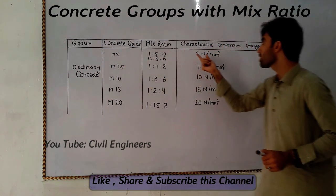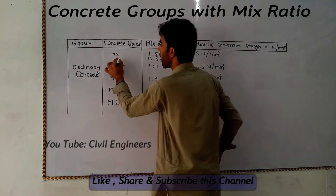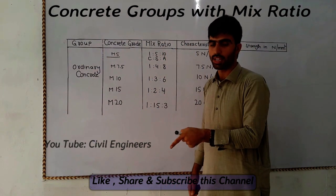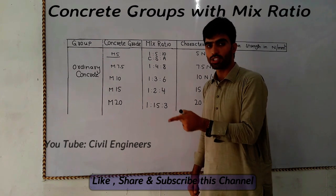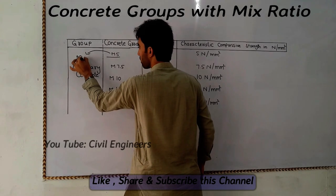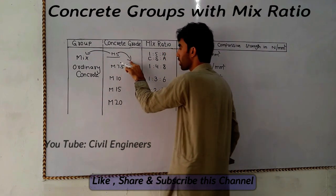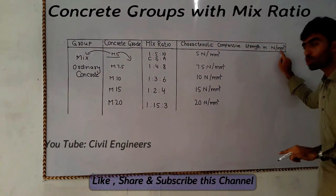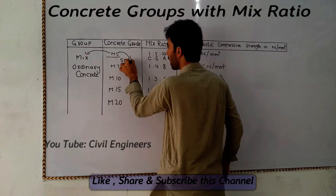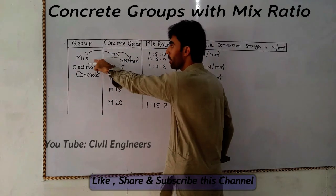The compressive strength for M5 grade is 5 Newton per mm square. So what is the meaning of M5? M means mix, and 5 means the compressive strength of the concrete in Newton per mm square. There is also my other video about grade of concrete — the link is in the description, you must watch it.